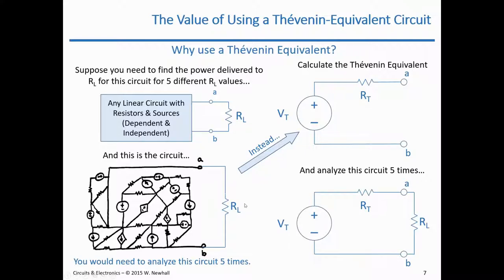Another value of the Thevenin equivalent is being able to characterize how a complex circuit behaves when you connect something to it. This is why the back of your stereo says 8 ohms or 4 ohms near the speaker outputs, and why the back of your television says 75 ohms near the coax/F connector.